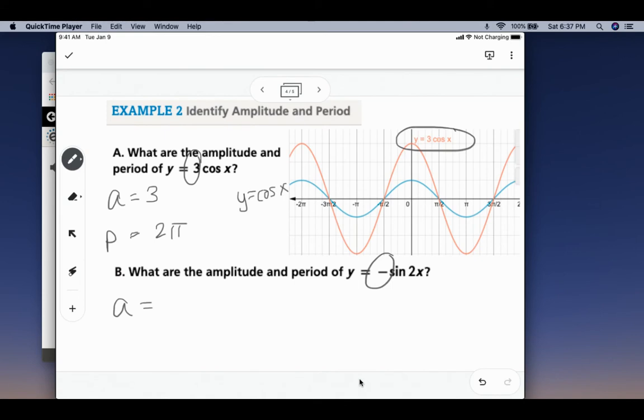So the absolute value of negative 1 is still 1. The amplitude in this case is still 1. That negative is going to tell us that we have a reflection over the x-axis. And then the period. The period will be different on this one.